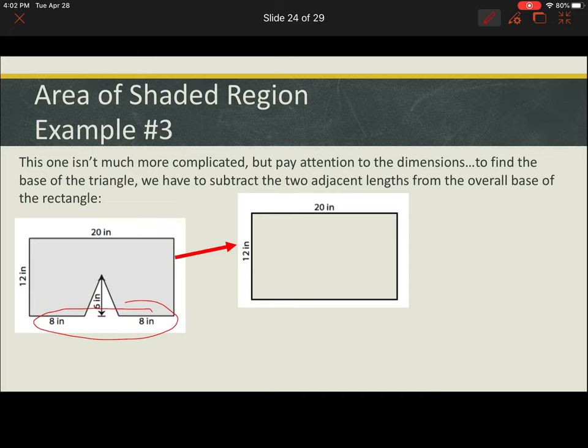That's pretty easy. We just see that we have a base and a height, 20 and then 12 inches. But now if we look at the triangle, we see that we're not given the dimension of the base. However, we're given the dimensions of the two sections right next to it on either side.